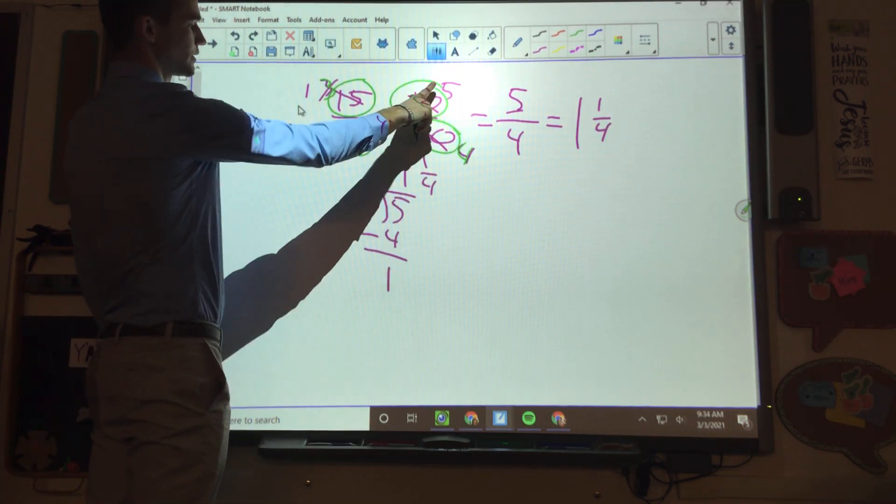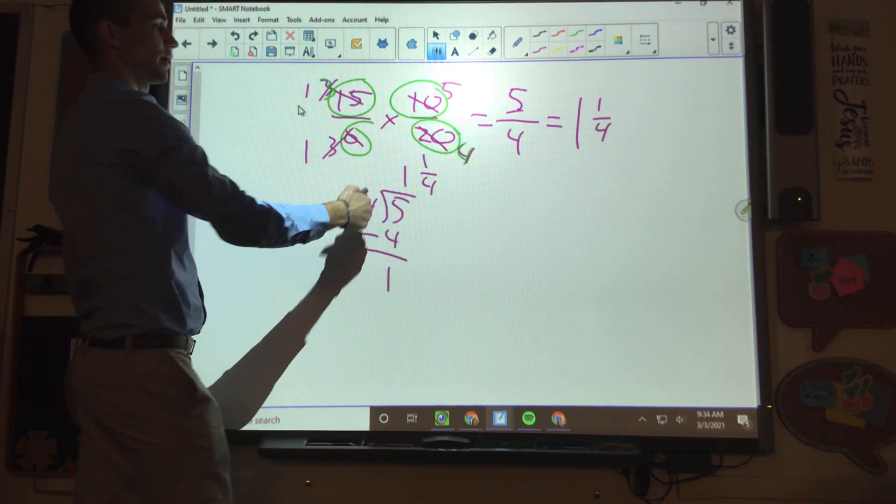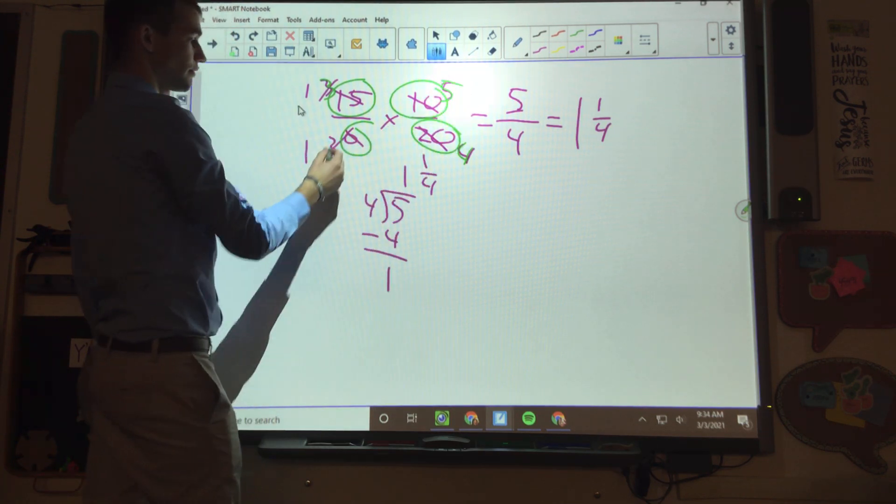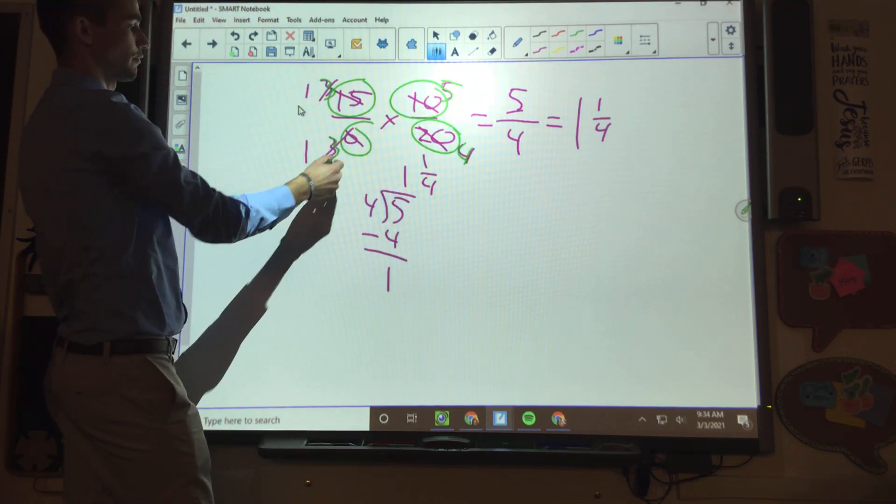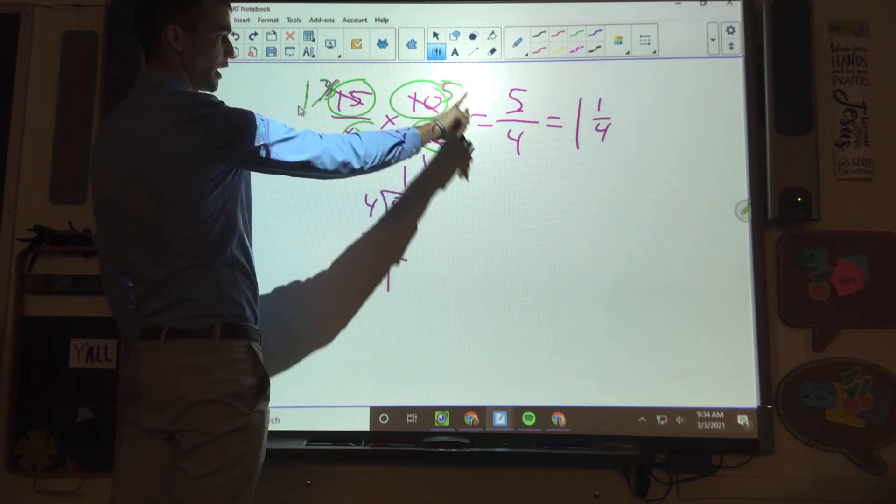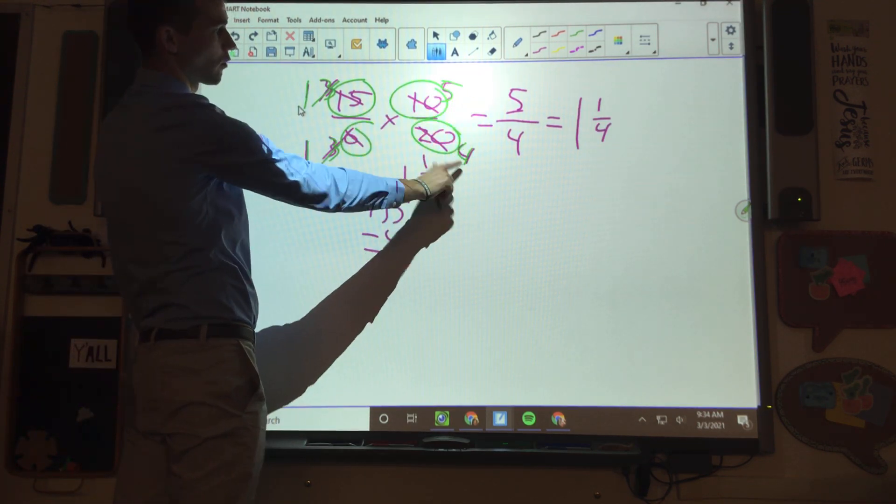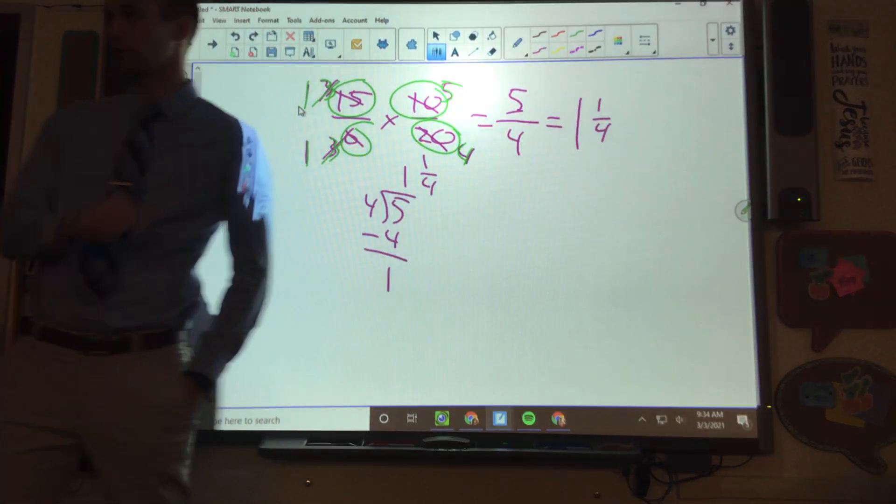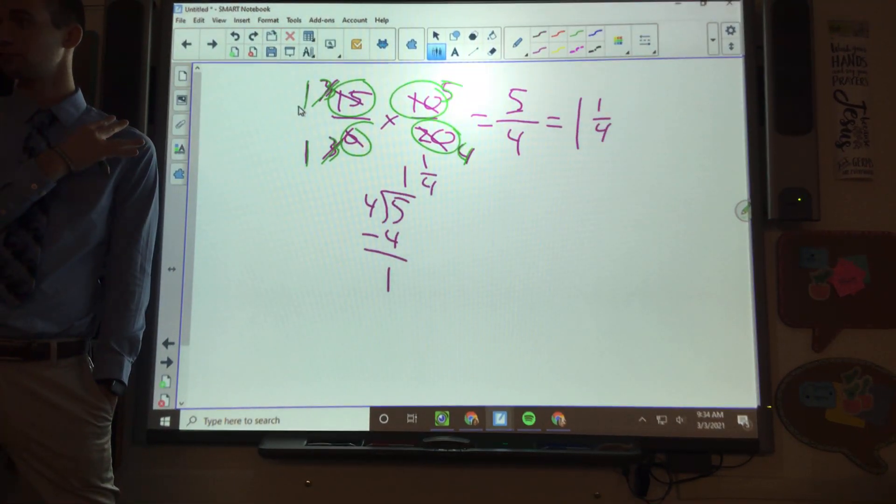3, 4, 10 and 6, we can divide both by 2, this becomes 5, this becomes 3. So now we've got 3 over 3, cancel both those out, we get 1 over 1. And we've got 5 over 4, which becomes 1 and 1 over 4. That's where we're at. Good?